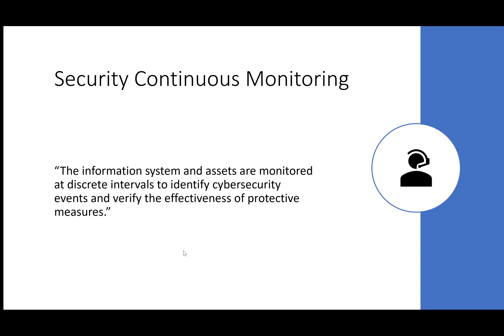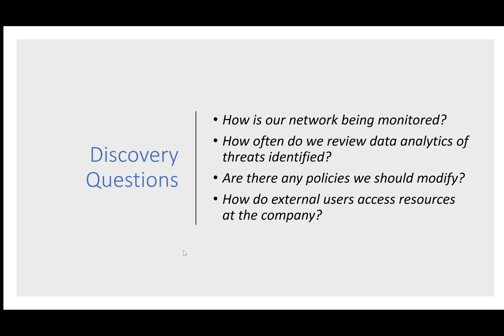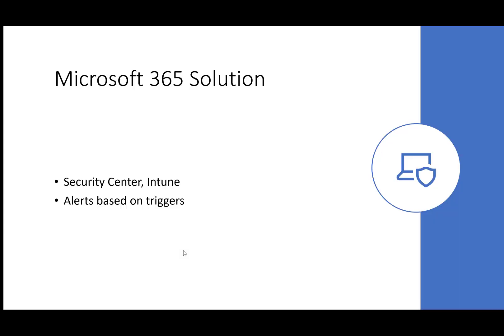The next category is Security Continuous Monitoring. The information system and assets are monitored at discrete intervals to identify cybersecurity events and verify the effectiveness of protective measures. This is really asking: how periodic are we reviewing the policies in place? How often are we reviewing the analytics behind security and endpoints? Are there any policies we should modify? It's best to revisit how external users access company resources, what those contracts look like for suppliers or contractors, and how users send company data to external parties.